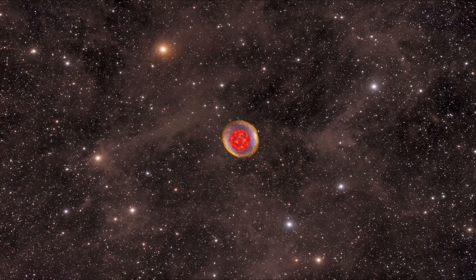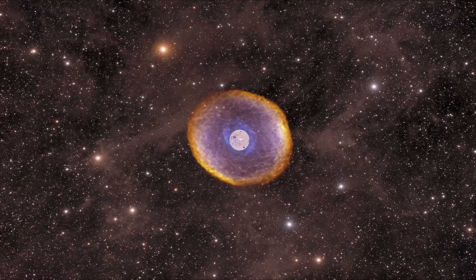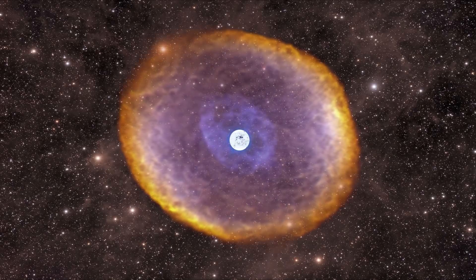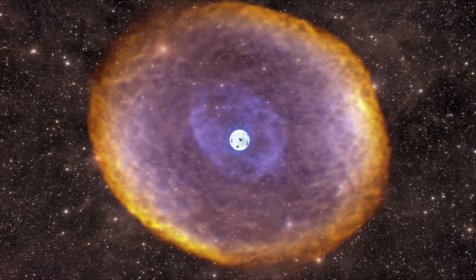The outer layers bounce off and create a planetary nebula. What remains of the core becomes an enriched mass called a white dwarf. This is the fate that awaits the sun in around 7 billion years.